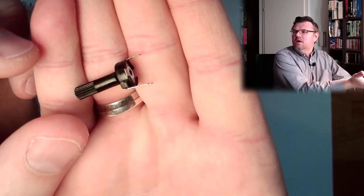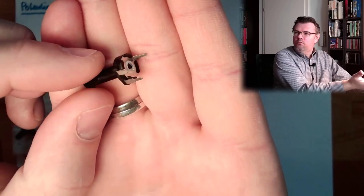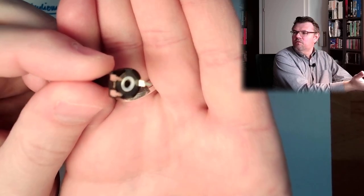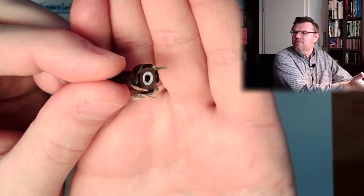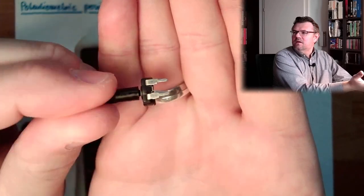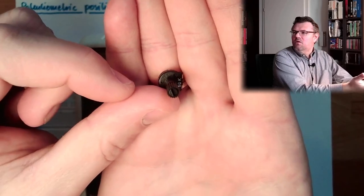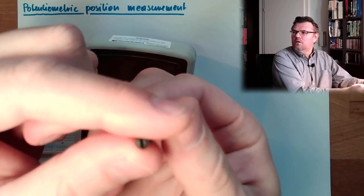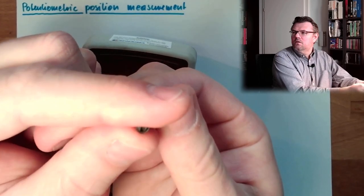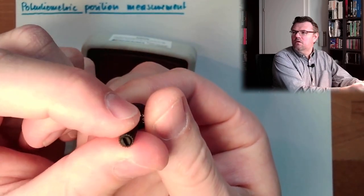This is a potentiometer. As you see, it has three connectors, three legs. So these are the three connectors and one knob, and this knob can be turned. So you can turn the knob.